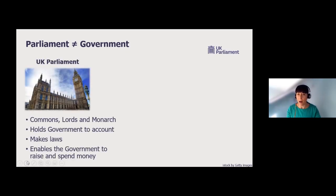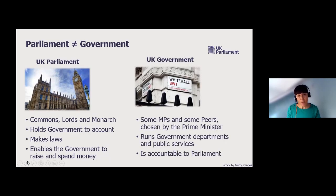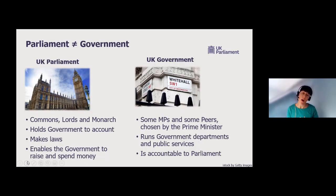The first is to remind you all that Parliament is not the same as government — a legislature is not the same as an executive. For the UK Parliament in Westminster, Parliament is all MPs in the House of Commons, all peers — members of the House of Lords — and the Queen is officially part of Parliament too. The government, on the other hand, is just some MPs and some members of the House of Lords chosen by the Prime Minister to be ministers, to run government departments and public services. That government is accountable back to Parliament. One of Parliament's key roles is to hold government to account, as well as to make and pass laws and to approve government spending proposals.